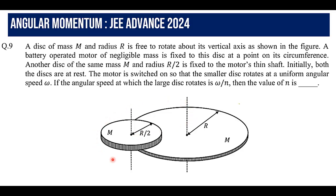Initially, the total angular momentum of this system is 0. When the motor is switched on, the smaller disc starts rotating at a uniform angular speed omega. The larger disc also rotates, and its angular speed is given as omega/n. We have to find the value of n.